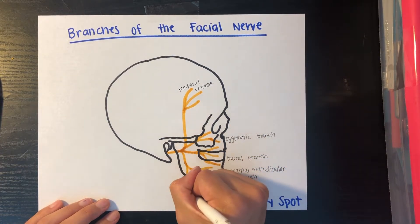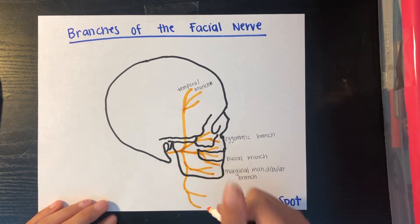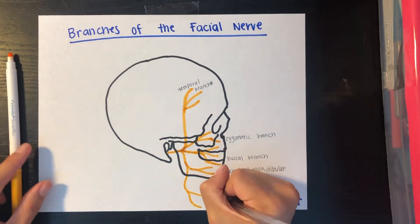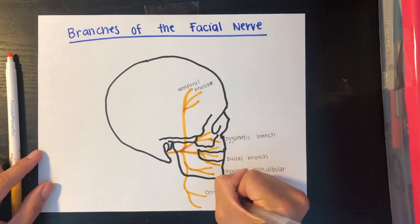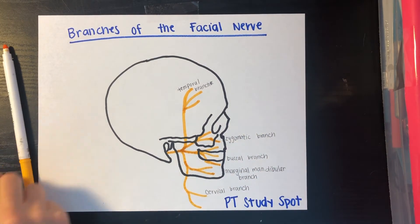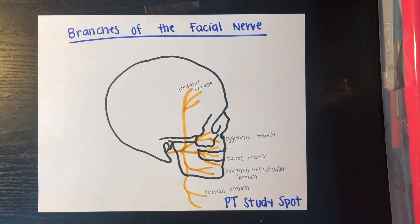Lastly, coming right above that hyoid bone, you have your cervical branch. This nerve innervates your platysma. And that is your facial nerve.